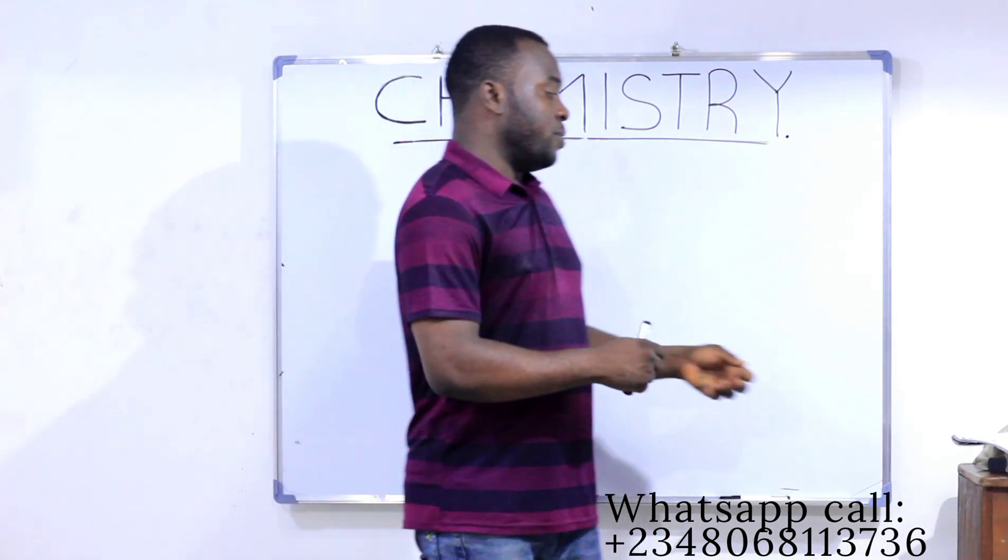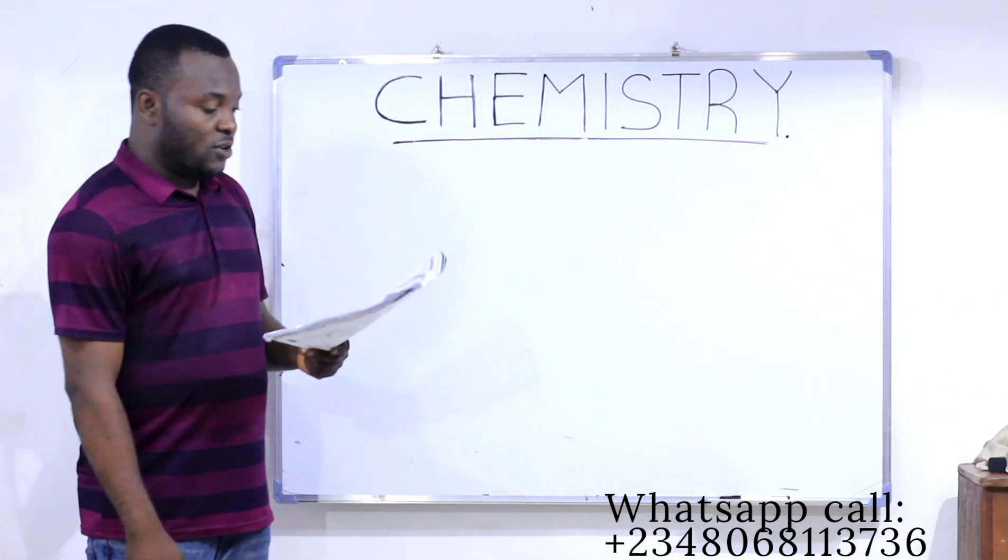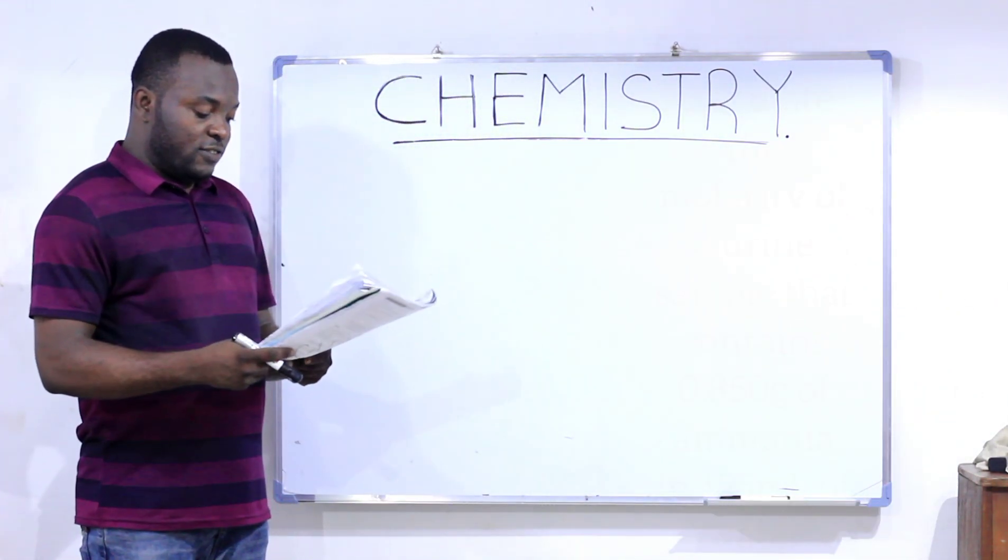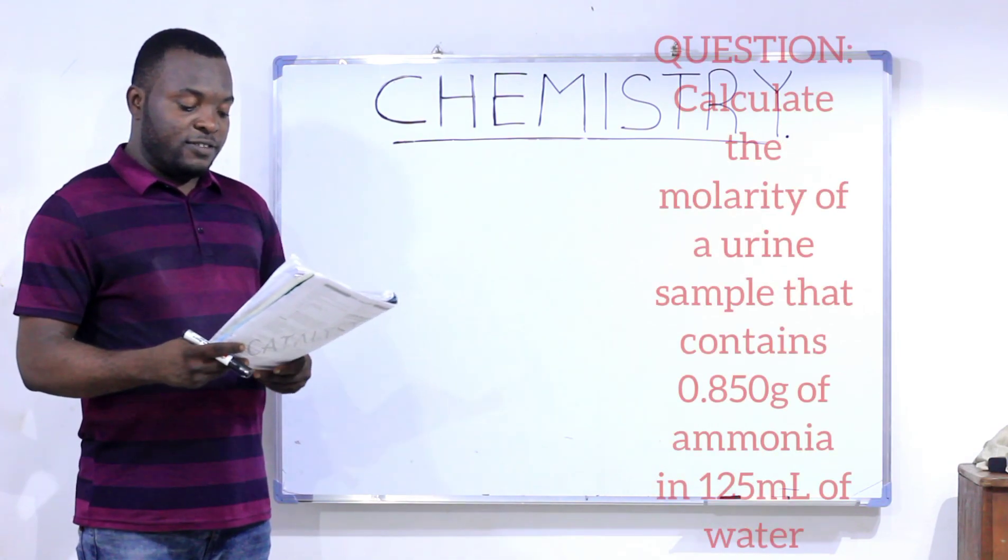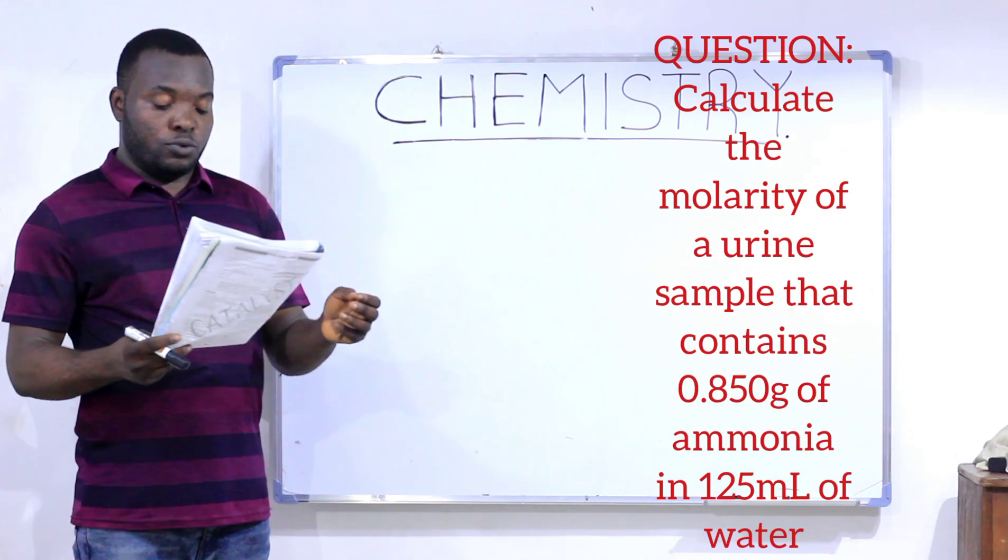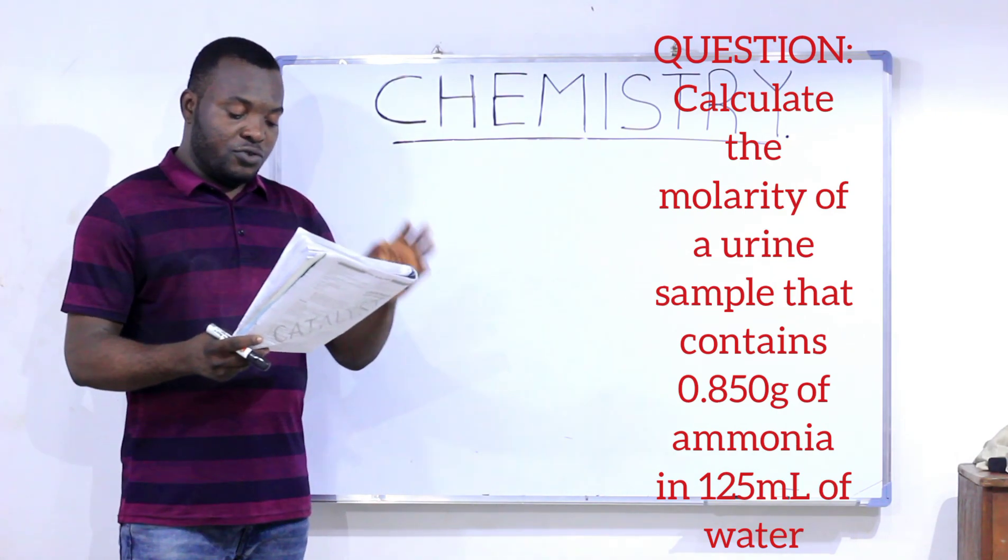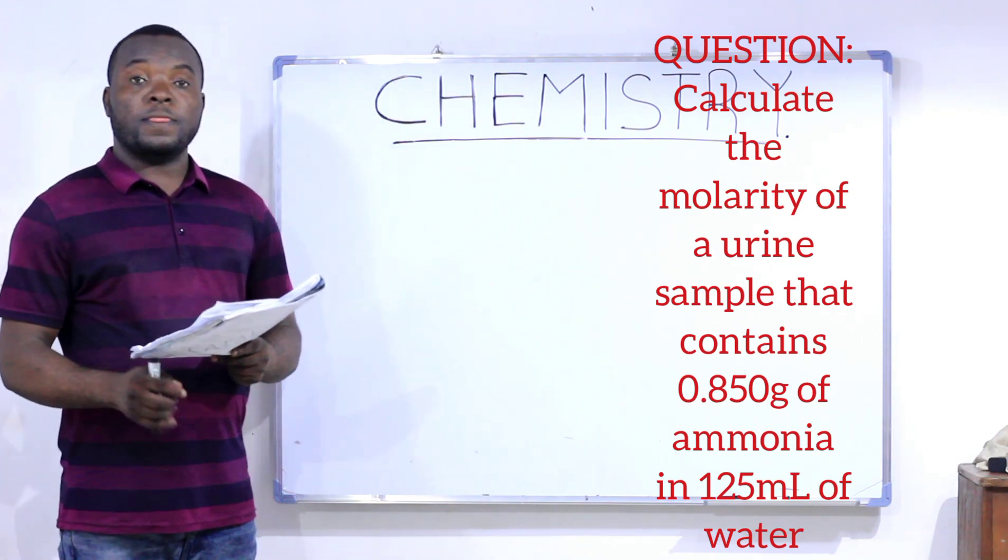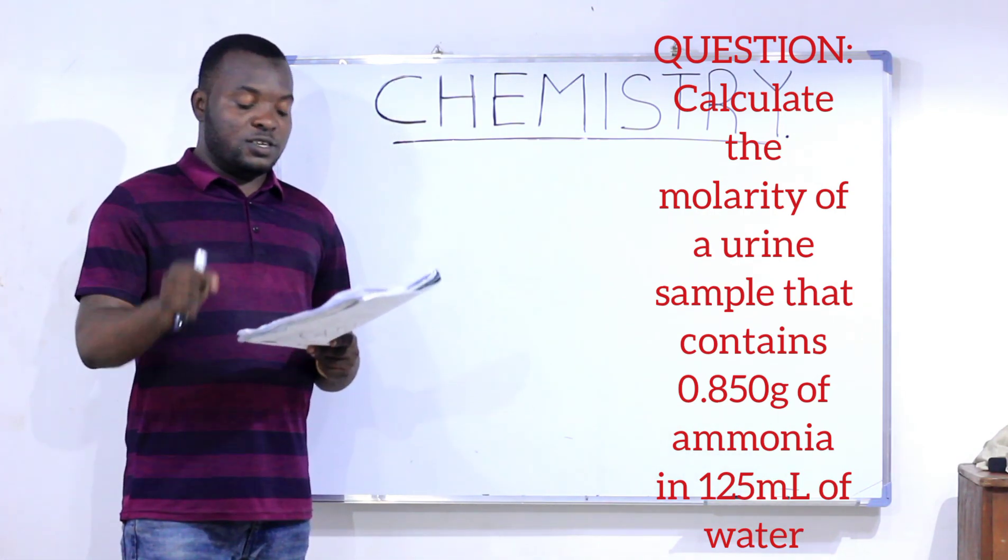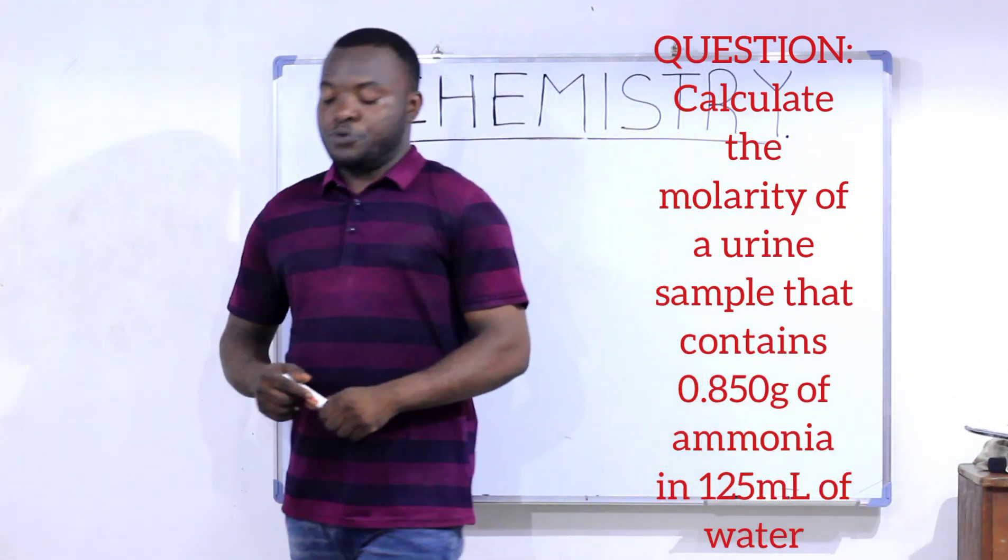Now let's solve this problem with molarity so you can get clearer understanding. The question says, calculate the molarity of your sample that contains 0.850 grams of ammonia in 125 milliliters of water. Let's solve this problem.